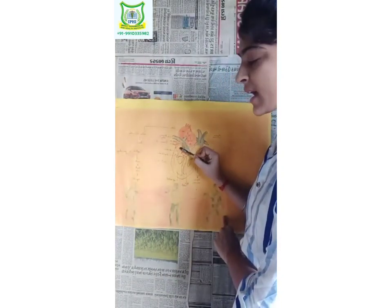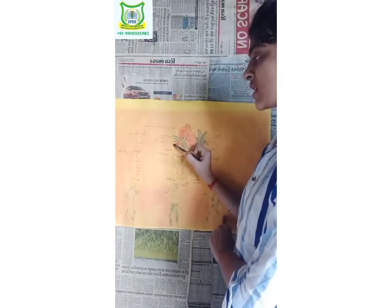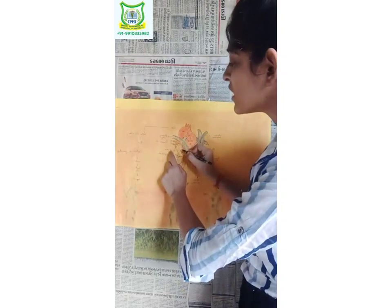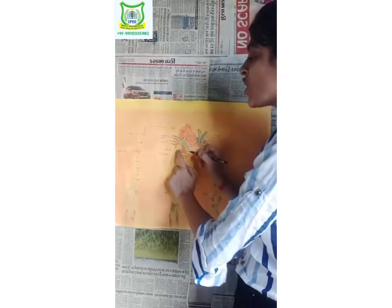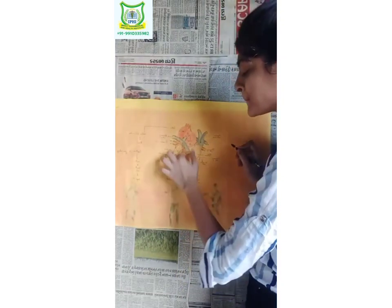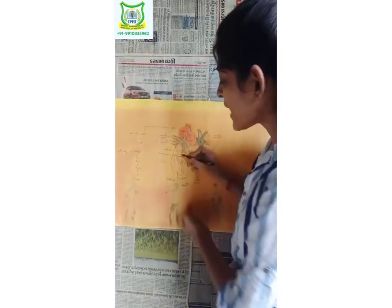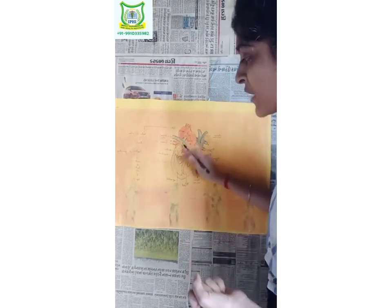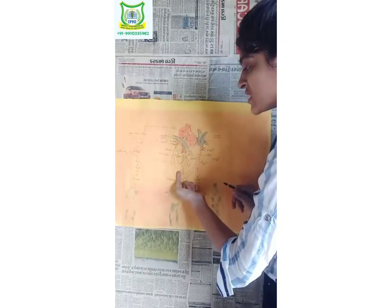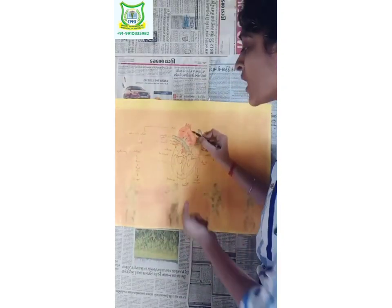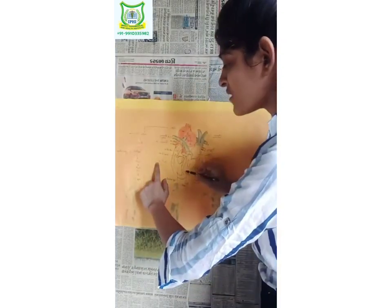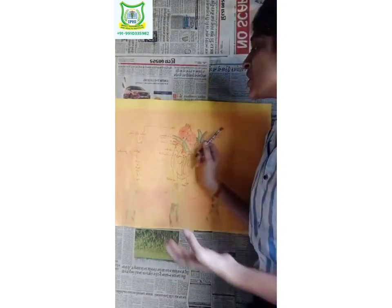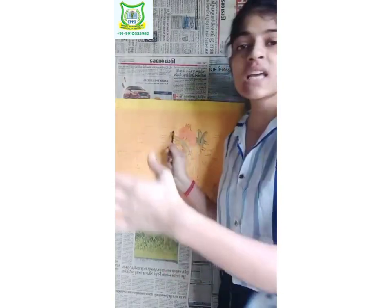This is our oxygenated blood, which goes to the left ventricle. Through the bicuspid valve, blood comes through to the left ventricle. The oxygenated blood also has a large left ventricle. This is our aorta, which creates our main channel.